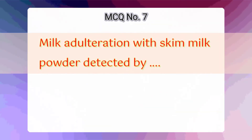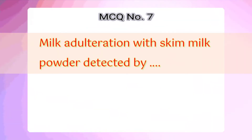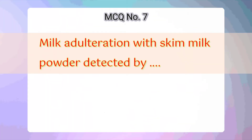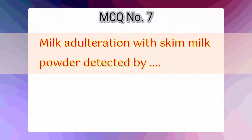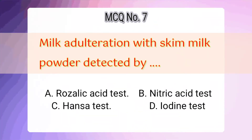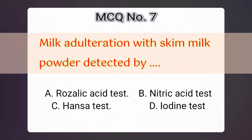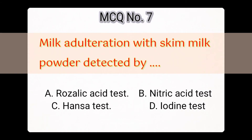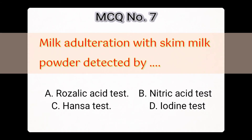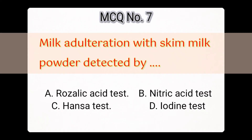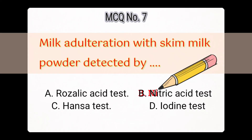7th question: Milk adulteration with skim milk powder is detected by — Option A: Rosalic acid test, B: Nitric acid test, C: Hansa test, D: Iodine test. Answer is B: Nitric acid test.